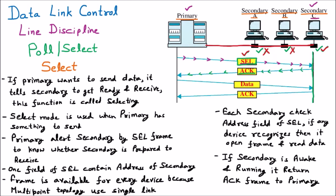Now the primary is aware that the secondary is ready because of the positive acknowledgement, so primary will send the data. Primary sends the data, and in between, secondary will send acknowledgements. This positive acknowledgement means 'I am receiving the data.' This transmission will end whenever primary sends an end-of-transmission, EOT message.